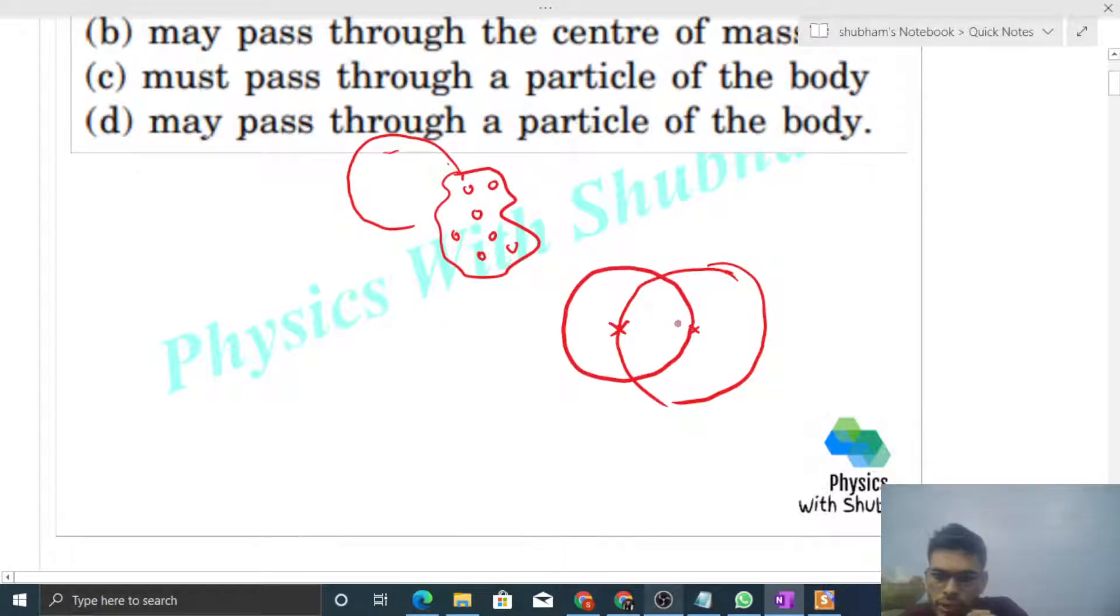You can see that the particles are in a circular path. This particle is in a circular path, this particle is in a circular path, this particle is in a circular path, right?